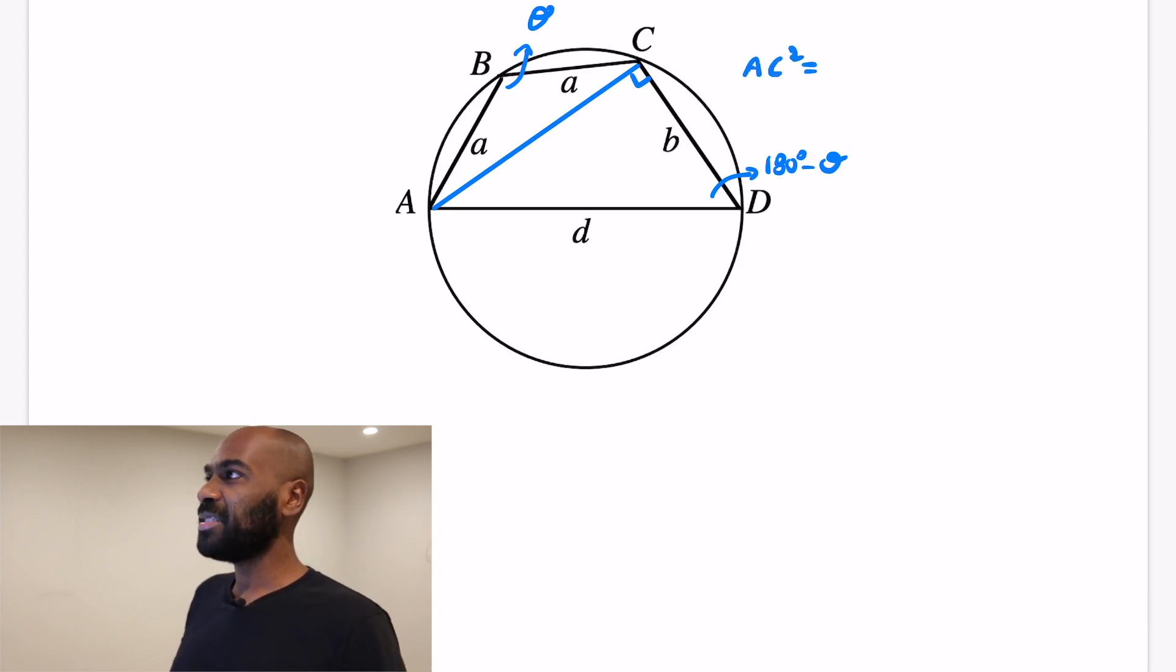So if we look at AC squared, it's a length in two different triangles, so we can use cosine law. We'll use the triangle ABC first. We get that AC squared is 2A squared minus 2A squared cos theta. But cosine theta itself is the negative of the cosine of 180 minus theta, so that'll give us a relationship between things because in triangle ACD, which is a right angle, the cosine of that angle 180 minus theta is B over D.